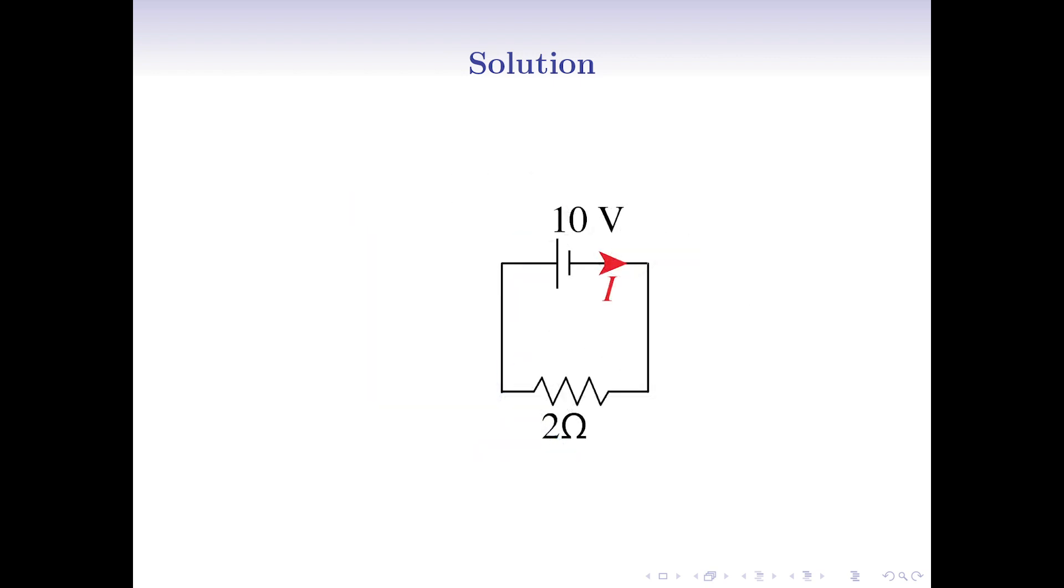Now, we have a very simple circuit. The 10 volt battery generates current coming out of its positive edge going through the 2 ohm resistance.